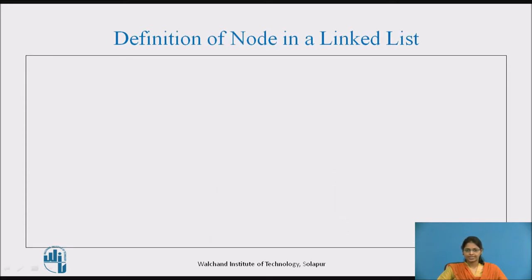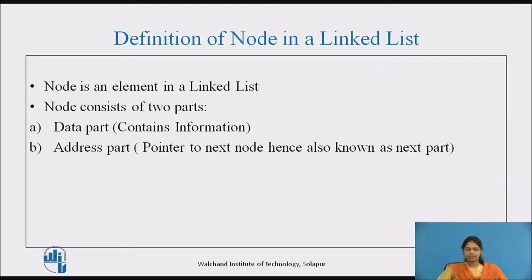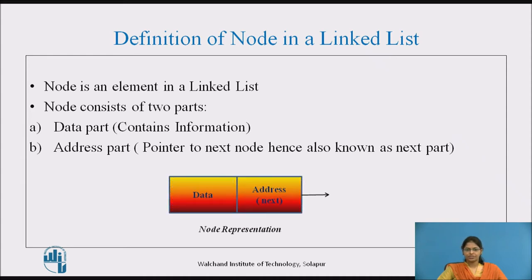Definition of a node in a linked list: A node is an element in a linked list. It consists of two parts. The first part is called the data part, which contains the information. The second part is called the address part, which is a pointer to the next node, and hence also known as the next part.